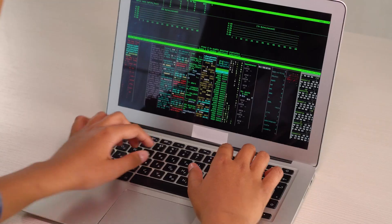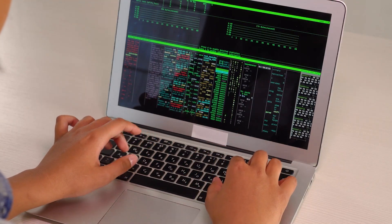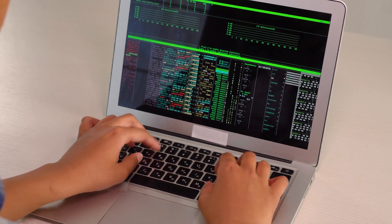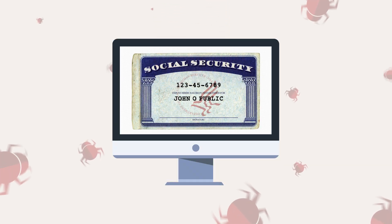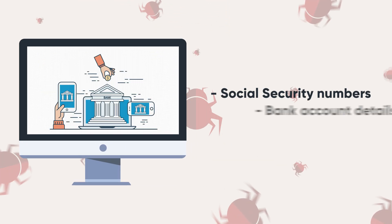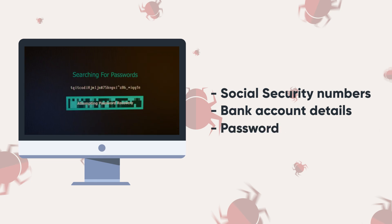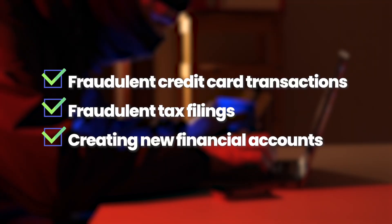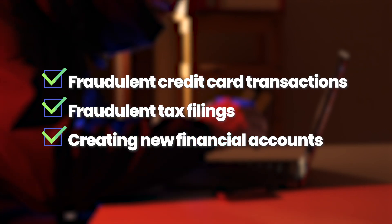There are a bunch of different ways malware can facilitate identity theft. One of the main mechanisms is data exfiltration. Malware is known for siphoning sensitive personal information, including social security numbers, bank account details, and passwords from a compromised system. Once a cybercriminal has this sort of information, they can use it for illegal activities such as fraudulent credit card transactions, fraudulent tax filings, or creating new financial accounts under your name.